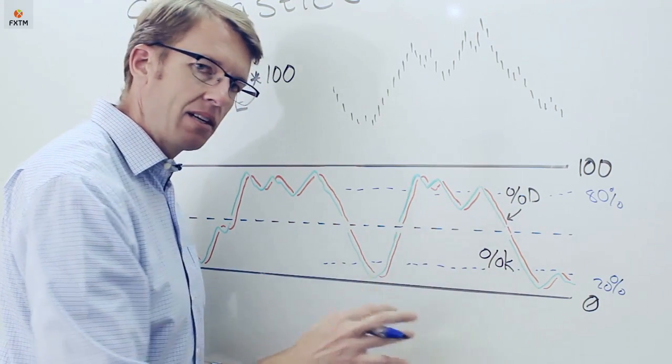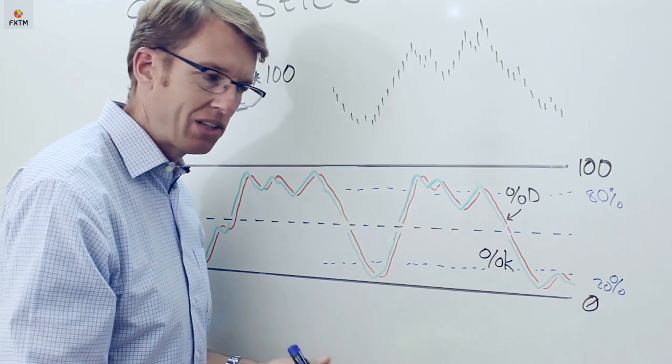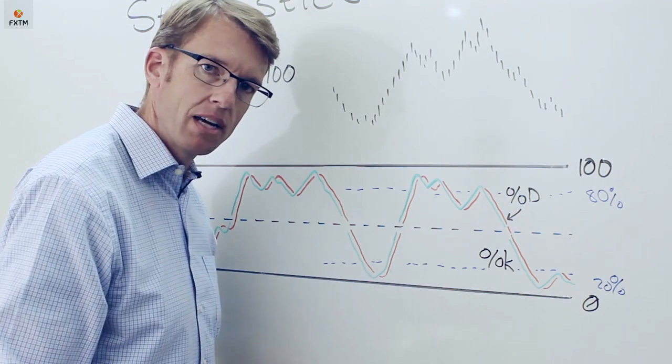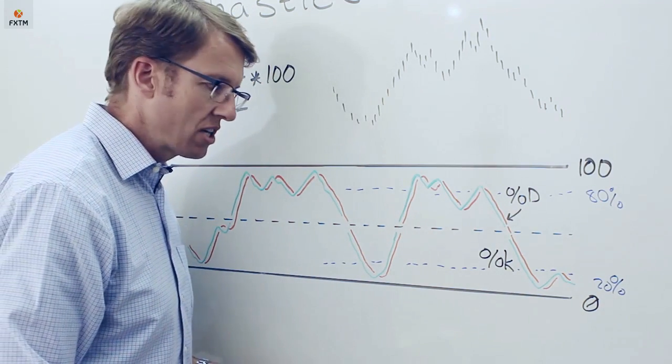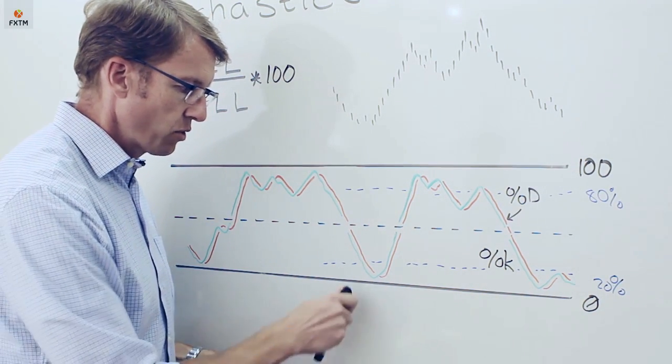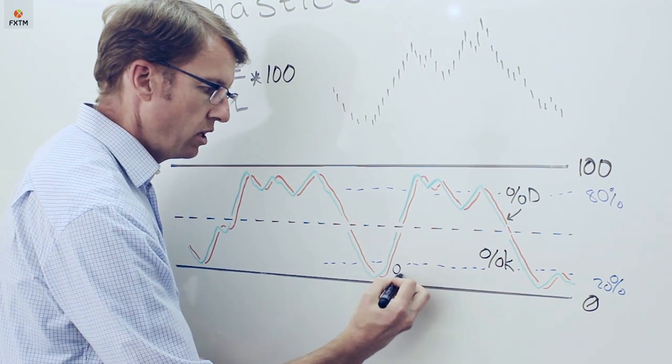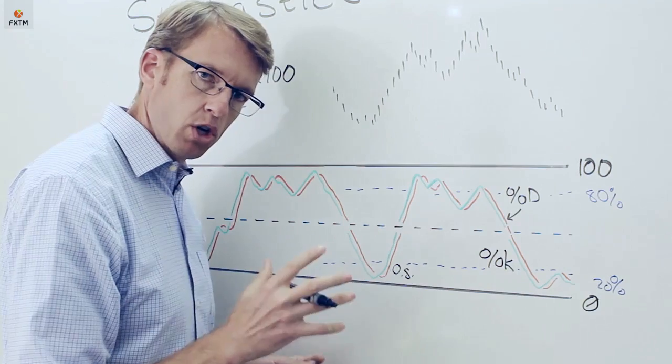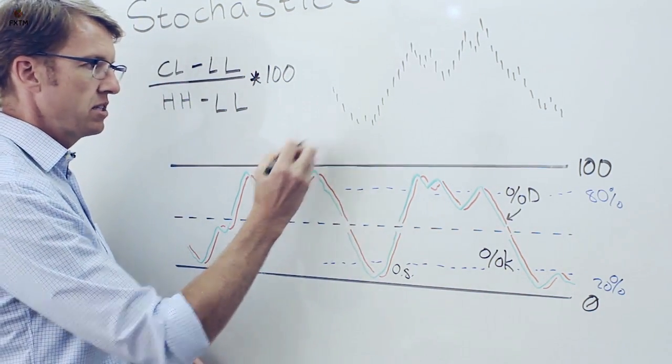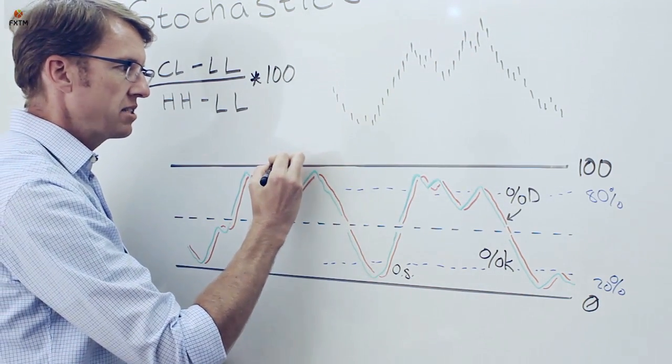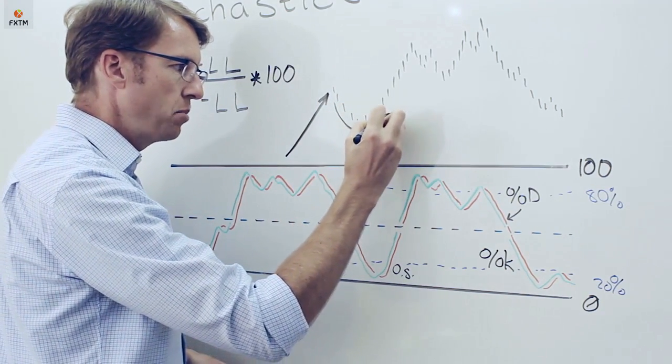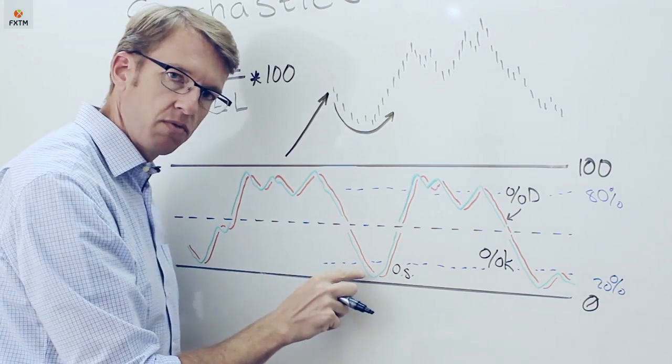Now, the stochastics oscillator at the beginning of a trend can be pretty volatile, so oversold and overbought readings at the beginning of a trend are probably not very helpful. Instead, what we're looking for is a time when the stochastics oscillator is in one of these extreme ranges, for example here where it's oversold, but when that were to occur in a bullish primary trend. So here's an example: let's say the price had been in a long-term trend for quite a while and then starts to pull back. This little rounded pattern here, and of course the stochastics oscillator is going to follow it.